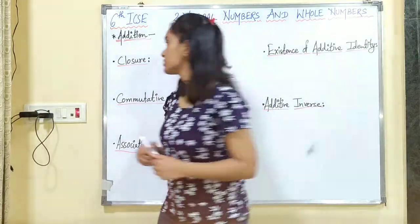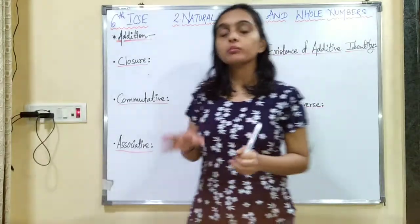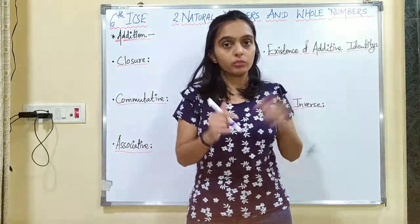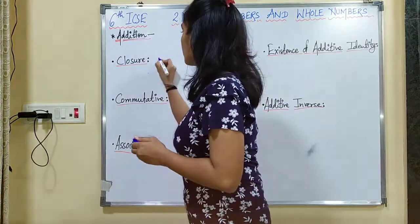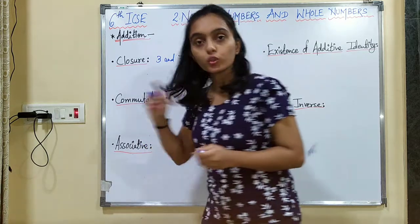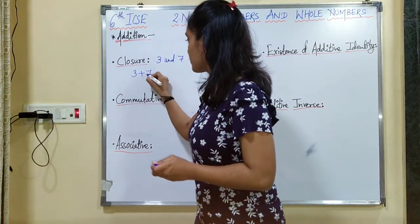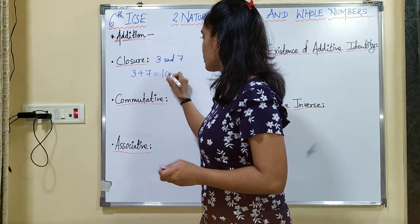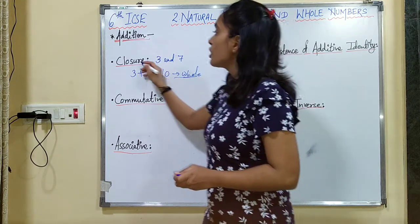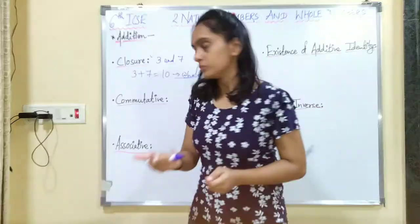Addition of Whole Numbers. The first property is Closure Property. Closure Property means if there are two whole numbers, their addition is again a whole number. For example, if I have 3 and 7, their addition is again a whole number. So Closure Property is satisfied by addition of whole numbers.